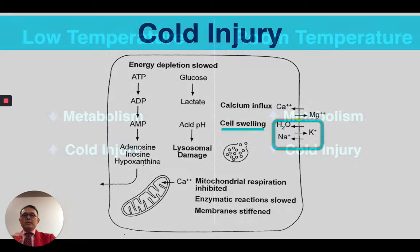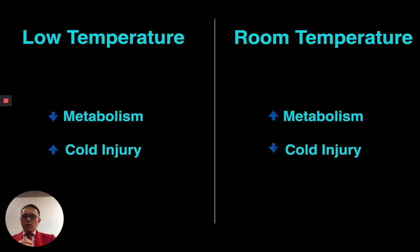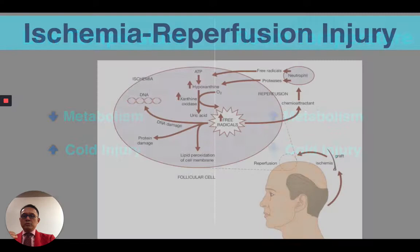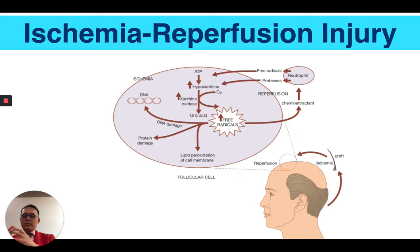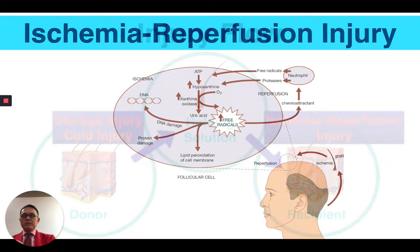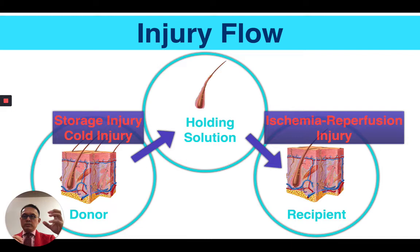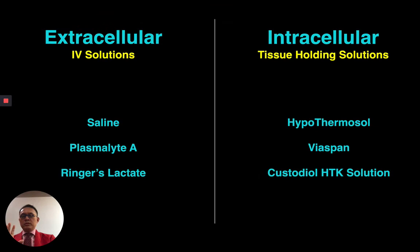Acidosis also causes cells to become acidotic. The issue with cold injury — is it good to keep grafts cold? Metabolism is vastly reduced, which is great, but there is cold injury. Are there storage media that can reduce this risk? The final type is ischemia reperfusion injury: when tissue is taken out of the body and placed back, increased oxygenation can cause free radical damage. So when tissue is placed into cold storage medium, you get storage injury, cold injury, then ischemia reperfusion injury upon re-implantation. We try to reduce all these injuries.